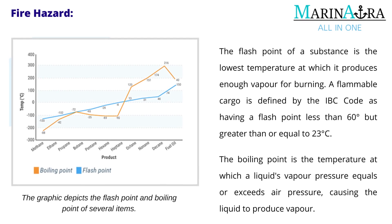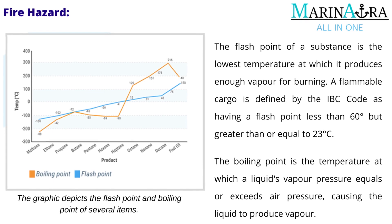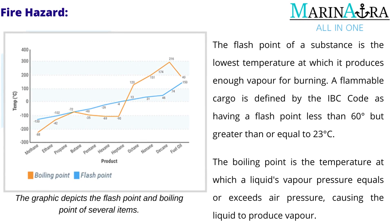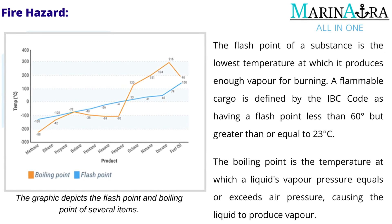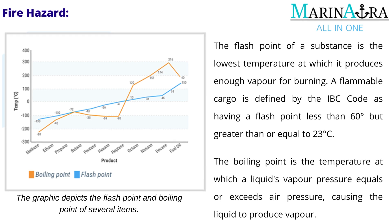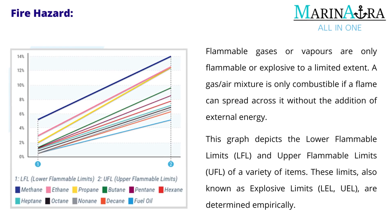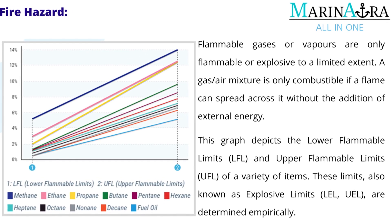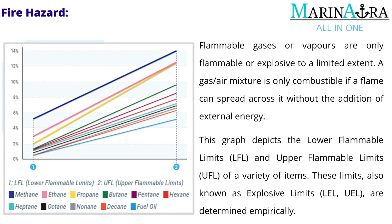The flashpoint of a substance is the lowest temperature at which it produces enough vapor for burning. A flammable cargo is defined by the IBC code as having a flashpoint less than 60 degrees but greater than or equal to 23 degrees Celsius. The boiling point is the temperature at which a liquid's vapor pressure equals or exceeds air pressure, causing the liquid to produce vapor. The graphic depicts the flashpoint and boiling point of several items.